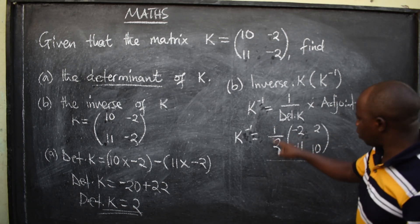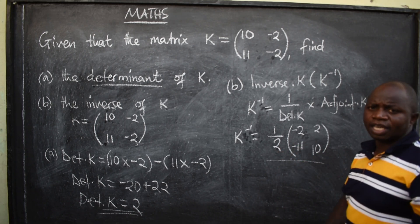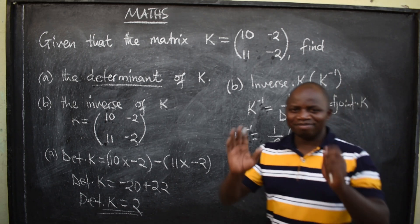So, you can say 1 over 2 times 2, 1 over 2 times negative 11, 1 over 2 times 10. But if you leave it there, that's fine. Bye-bye.